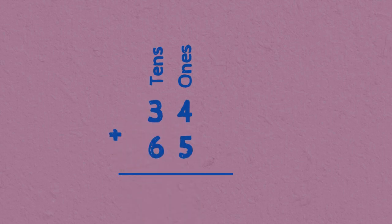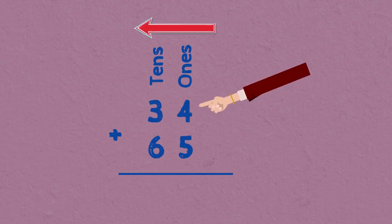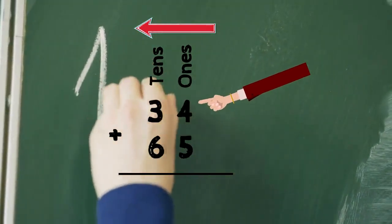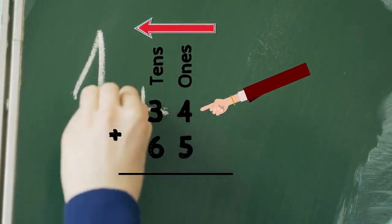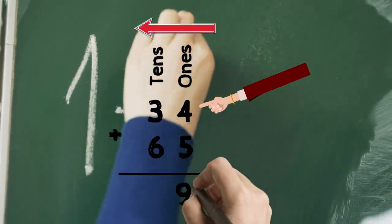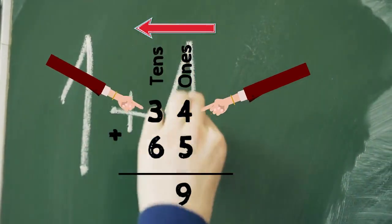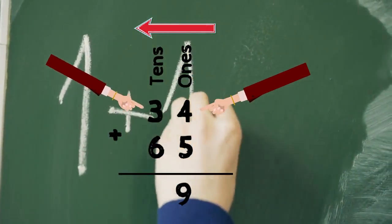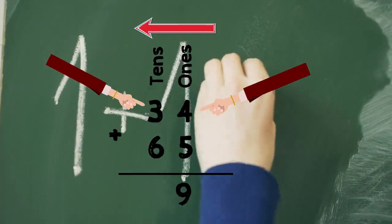We always start with the number on the right, which is the ones place, and then make our way to the left to the tens place. So we'll add the ones first: 4 plus 5 equals 9. Then we'll move to the tens place: 3 plus 6 equals 9, and the answer is 99.